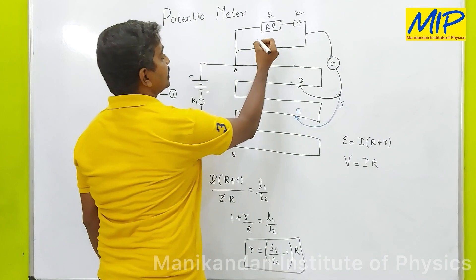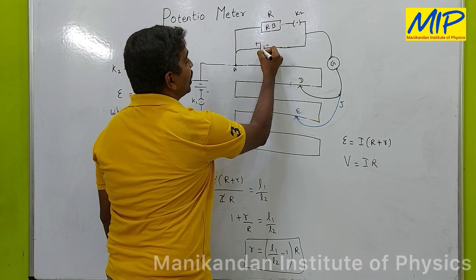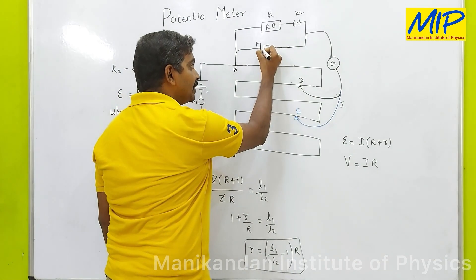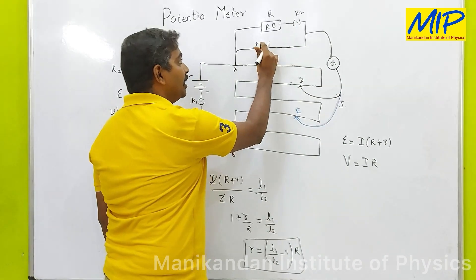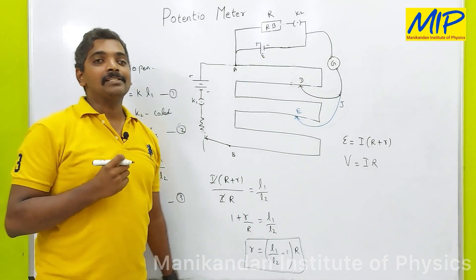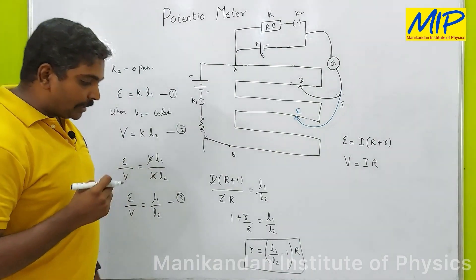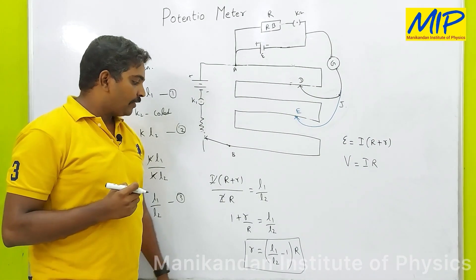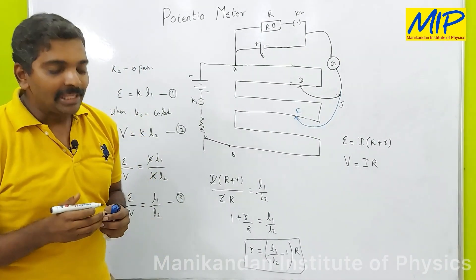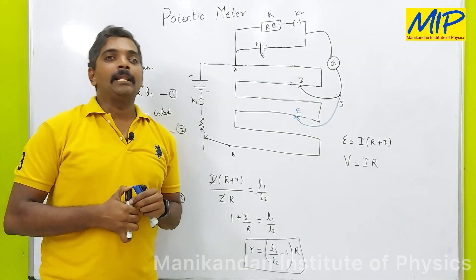The internal resistance is the resistance between the positive and negative terminals of the cell. So, using the potentiometer, we can find both the internal resistance and the EMF of the cell.